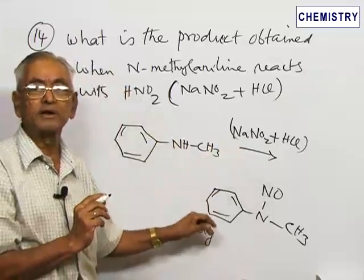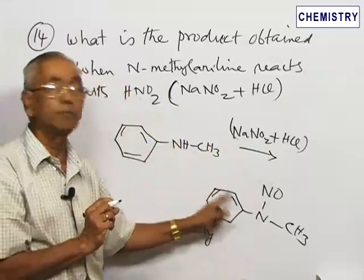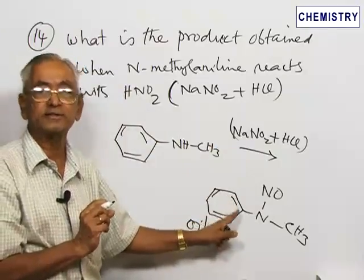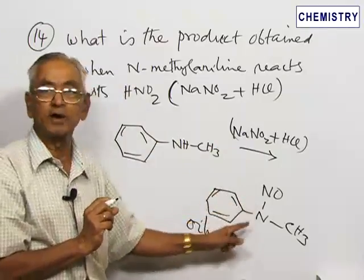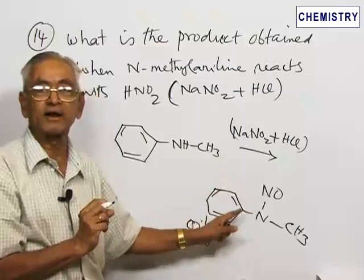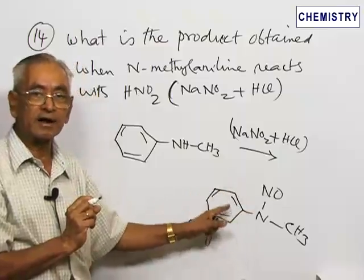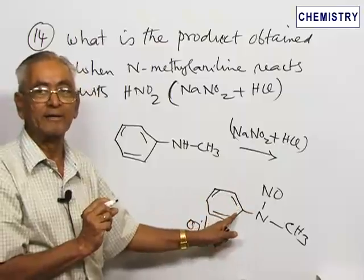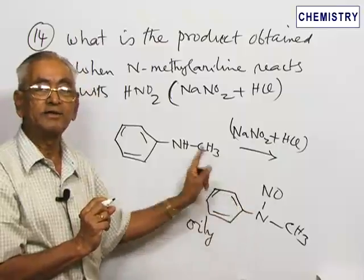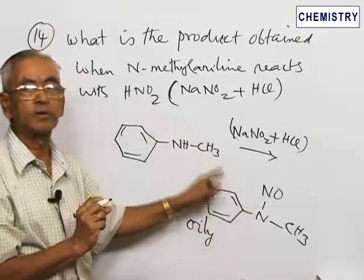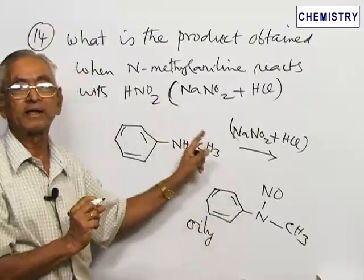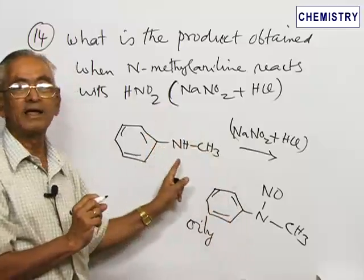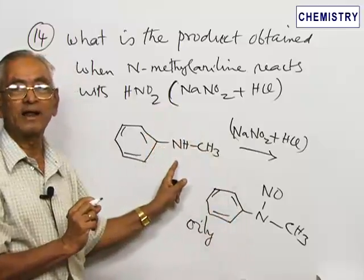One important thing to remember: this is one of the very powerful carcinogens — it is cancer-producing. The N-nitroso derivatives of secondary amines are carcinogenic in nature and have to be handled with care. This is one of the typical reactions of an aromatic secondary amine, particularly like N-methyl aniline.